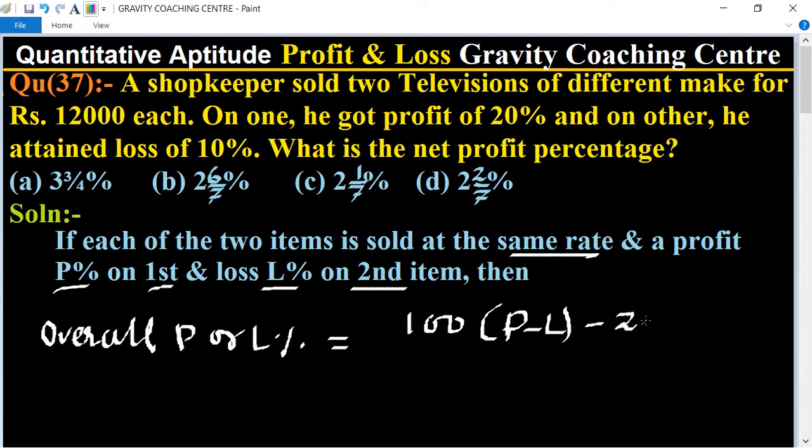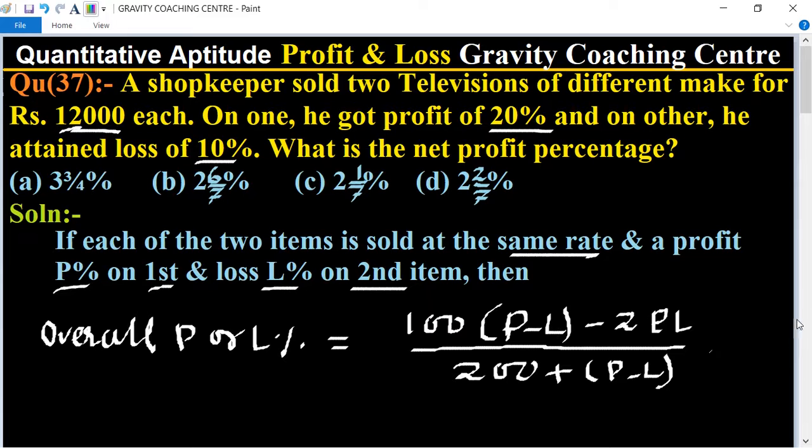In this question, the price of each TV is 12,000 with 20% profit on first TV and 10% loss on second TV. So we use this formula.